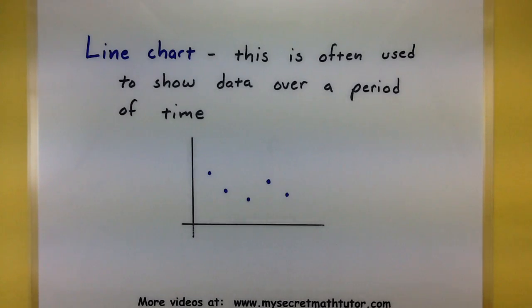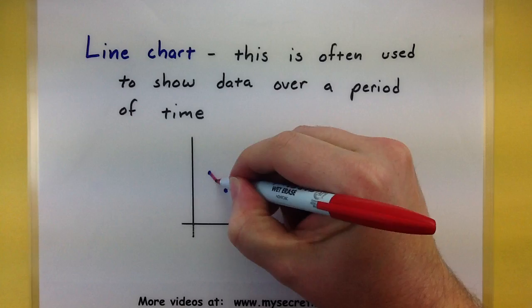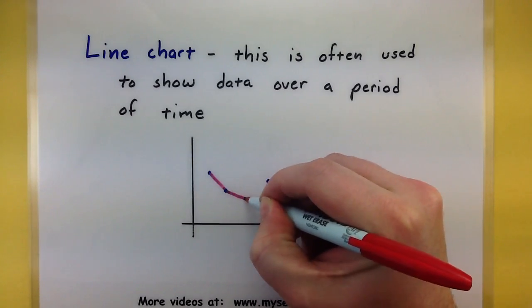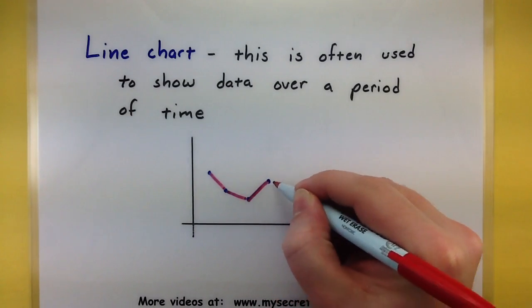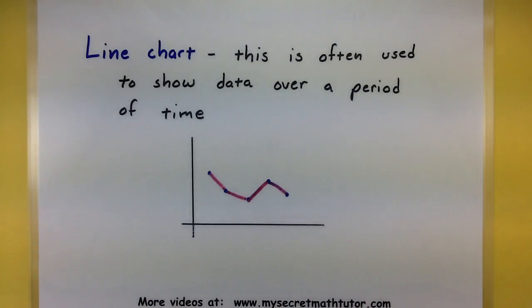In a line chart, we often use these to show how the data changes over a period of time. And a real key feature of these is that we essentially take a scatter plot and we use line segments to connect the actual data values. Now again, this is really good to see how the data changes over time because we can see if the data is going up or going down or really what it's doing or look for trends.